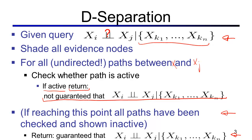As a reminder, what that means is that for any probability distribution defined with a Bayes net using the structure of the graph that we're working with — any probability distribution that fits this graph structure — will satisfy this conditional independence.